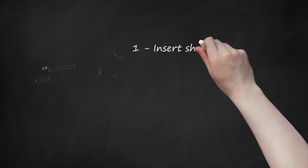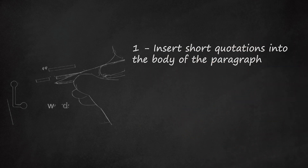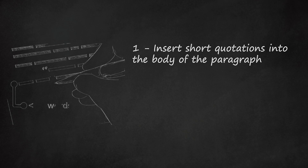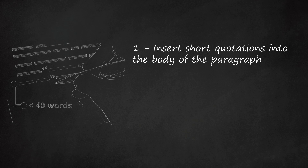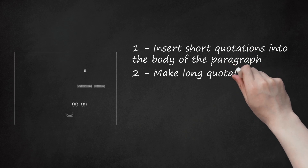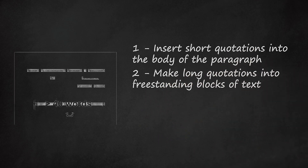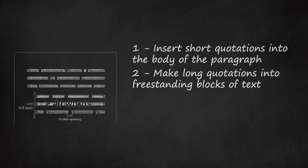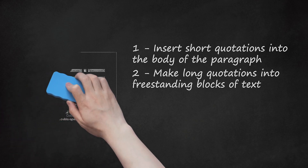Method 3: Quoting Books in APA Format. Step 1: Insert short quotations into the body of the paragraph. A quotation shorter than 40 words does not need to be its own freestanding block of text; it can simply be incorporated into the paragraph. It should begin and end with double quotation marks. Step 2: Make long quotations into freestanding blocks of text. When quoting an excerpt longer than 40 words, start with a signal phrase. Begin the quotation on a new line, indent it 0.5 inches from the left, and double-space it. Do not use quotation marks.